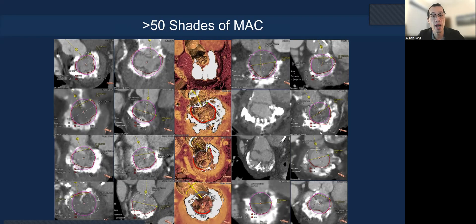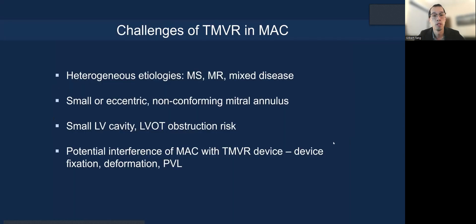We know that there are over 50 states of MAC because everyone has different types and distribution, and so the management options can be different. The number of challenges with TMBR and MAC — the etiology are quite heterogeneous: that's mitral stenosis, regurgitation, or mixed. The annular orifice can be small or eccentric and is non-conforming because it's rigid due to the calcium. The LVOT cavity obstruction risk can be significant because the LV cavity can be small. And finally, there's potential interference of the MAC with the TMBR devices, so it can affect device fixation, anchoring, deformation, and even paravalvular leak.